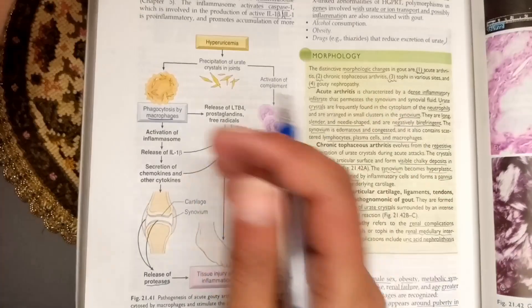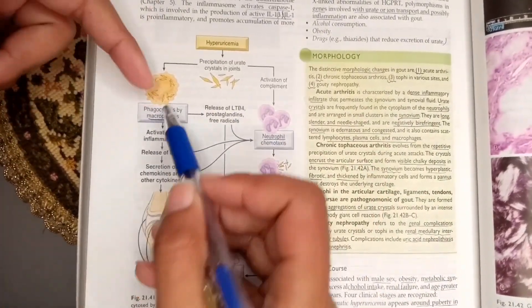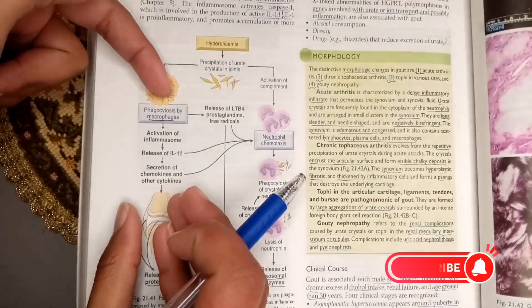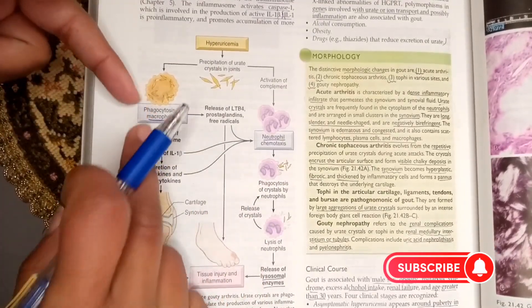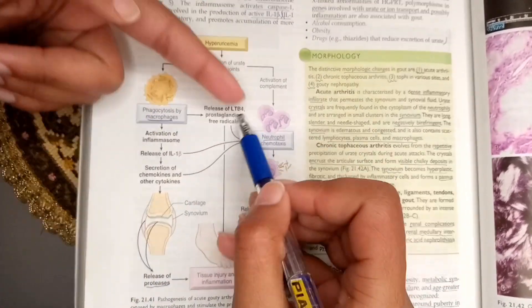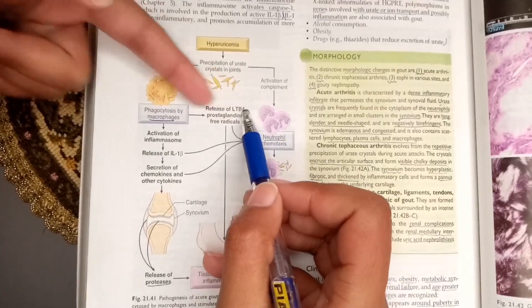The macrophages are not only increasing interleukin-1 levels but also releasing leukotriene B4, prostaglandins, and free radicals. These leukotrienes and prostaglandins are responsible for stimulating neutrophils.